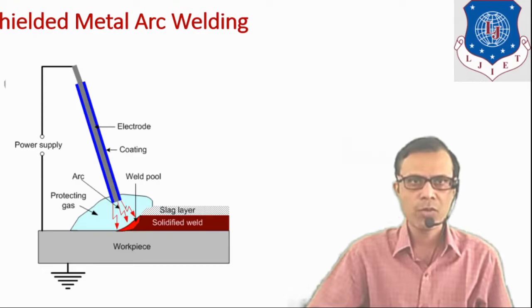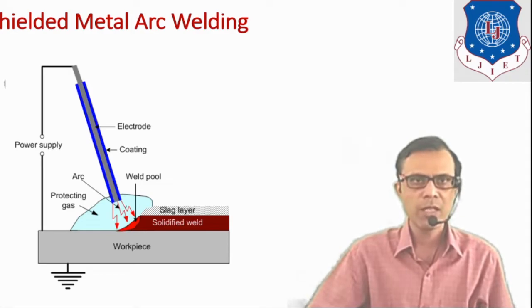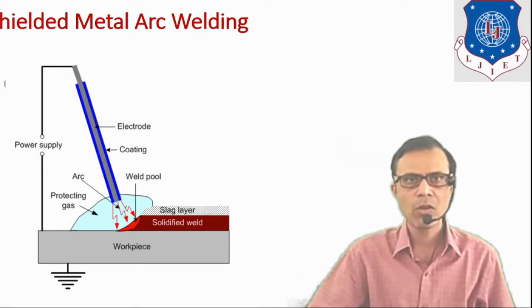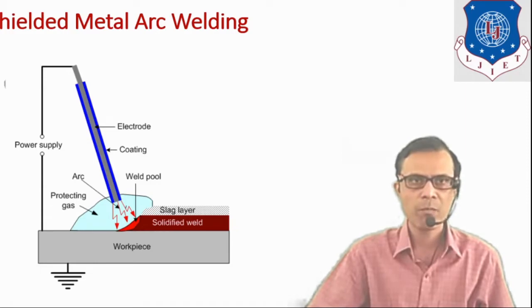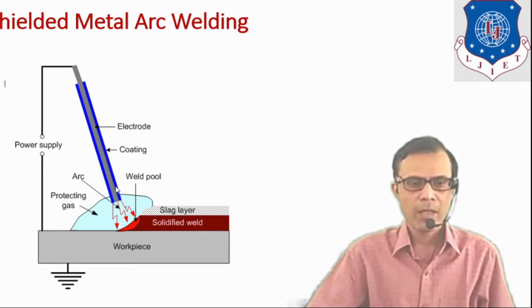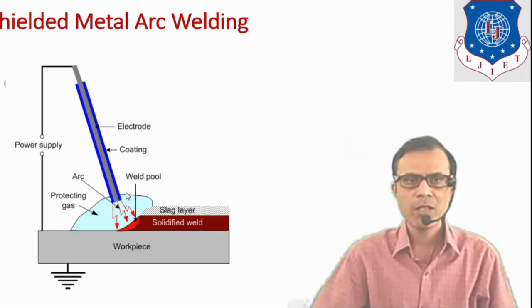The equipments which are used for this process are power source, it may be AC or DC power source, electrode holder, and electrode with flux coating. Formally, the electrodes were used without coating also. They were known as bare electrodes. But nowadays, commonly used electrodes are provided with flux coating. So here, this setup is shown.